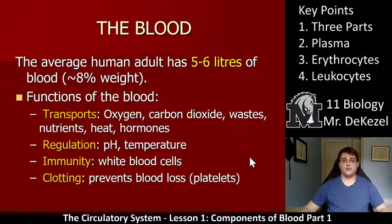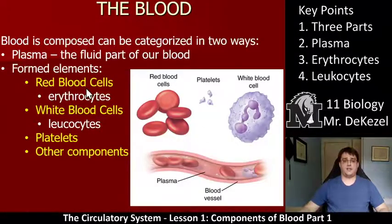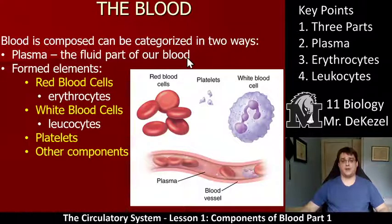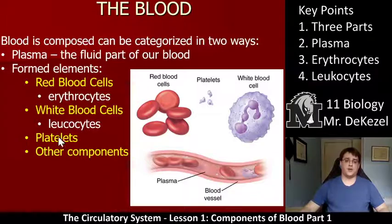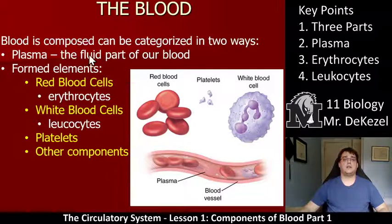Blood is composed of two different parts. There's the fluid part, which is the plasma. And then there's the formed elements, which are essentially all those solid components — red blood cells, which we call erythrocytes; white blood cells, which we call leukocytes; and platelets, which are involved in clotting. Plasma is the fluid part of your blood and is essentially water mixed with a few other things.